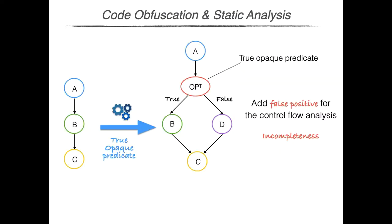Consider the control-flow graph of a program that executes block A, block B, and then block C. One of the most common and powerful obfuscations is based on the insertion of opaque predicates. In this case, we insert a true opaque predicate — a predicate that always evaluates to true. This means that only the true branch is executed at runtime, and therefore the behavior of the obfuscated program is exactly the behavior of the original program, and block D is never executed. However, the true value of the predicate is unknown to the attacker, who considers both paths as possible. For this reason, block D usually contains bogus or misleading code that confuses the static analysis. The insertion of this true opaque predicate adds a spurious path to the static analysis of the control-flow graph, thus adding false positives to the static analysis of the program.